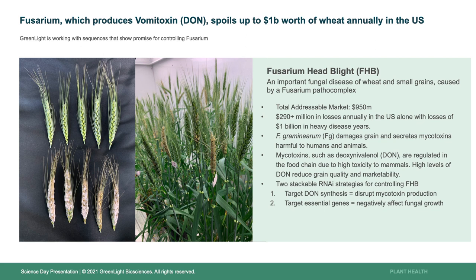Fusarium not only damages the grain but also produces mycotoxins that stay associated with the grain after harvest. Mycotoxins are harmful to humans and animals and are regulated in the food pipeline. We're taking two stackable approaches to control Fusarium Head Blight: targeted reduction in DON synthesis — reduction in mycotoxin synthesis — as well as a CIDL approach where we're targeting essential genes within the fungus that negatively affect growth and development.